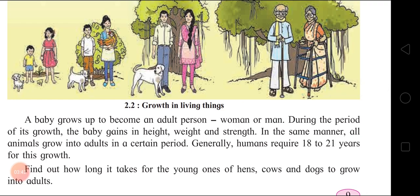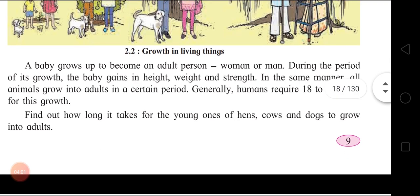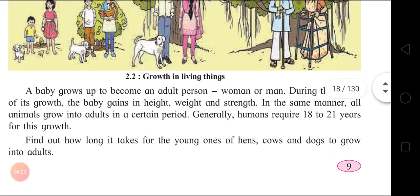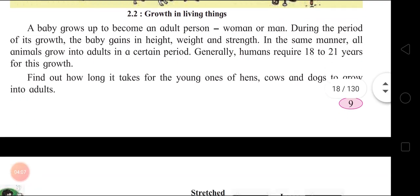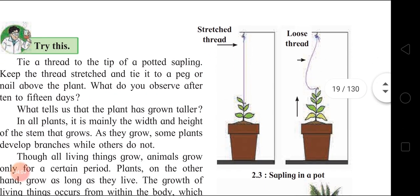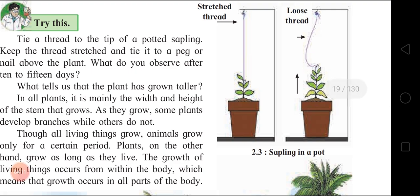A baby grows up to become an adult person, woman or man. During the period of its growth the baby gains in height, weight, and strength. In the same manner, all animals grow into adults in a certain period. Generally, humans require 18 to 21 years for this growth. Find out how long it takes for the young ones of hens, cows, and dogs to grow into adults.